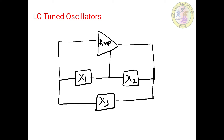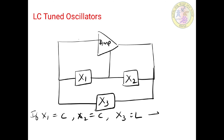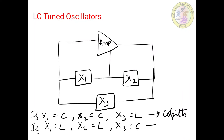There are two commonly used configurations of LC tuned circuits, based on x1, x2, and x3 values. If x1 is capacitance, x2 is capacitance, but x3 is inductance L, this configuration is known as the Colpitts oscillator. But if x1 is inductance, x2 is also inductance, and x3 is capacitance, this is known as the Hartley oscillator configuration.